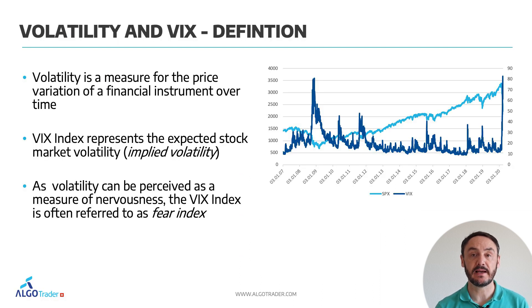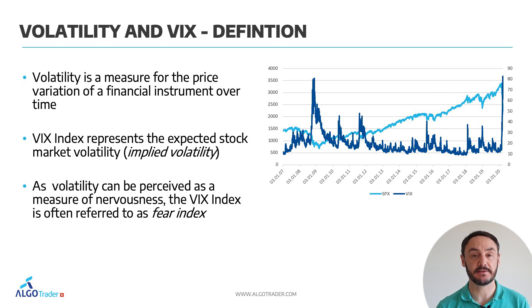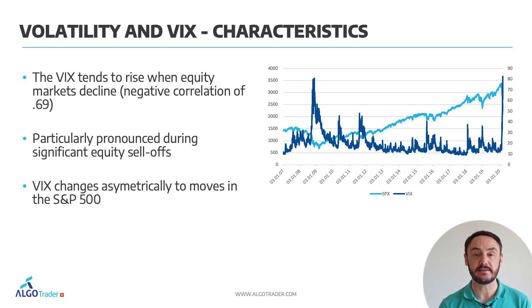When talking about volatile markets, we also need to talk about the volatility index VIX. Volatility is a measure for price variation on financial instruments over time. The VIX index represents the expected stock market volatility, also called the implied volatility — to be precise, the expected volatility 30 days from now. The VIX index is calculated from current option prices in the market. As volatility can be perceived as a measurement of nervousness, the VIX index is often referred to as the fear index. The VIX tends to rise when equity markets decline — this is called a negative correlation — and this is particularly pronounced during significant equity sell-offs. The VIX changes asymmetrically to moves in the underlying S&P 500 index.